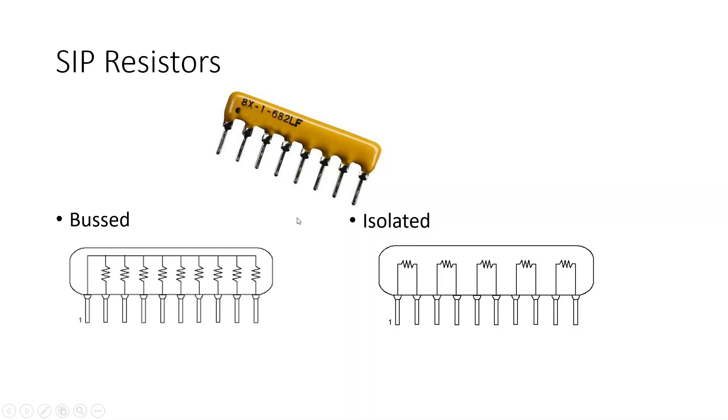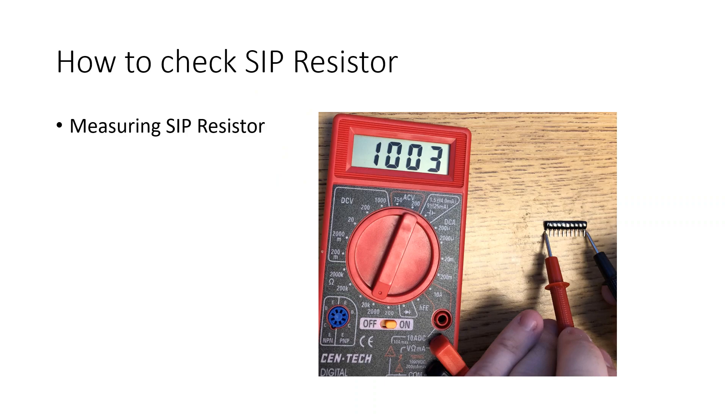Next, we're going to go over how to measure and then check and verify which resistor layout and value we have. So, measuring a SIP resistor. What we do is we're going to wire up our multimeter, set it to the ohms, measuring the resistance setting at 2000 ohms.